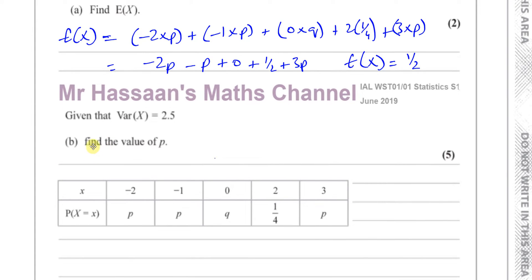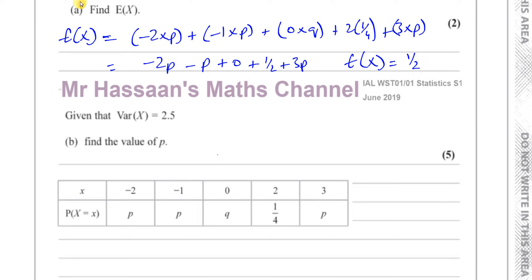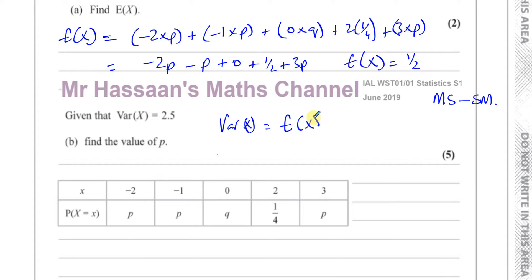I've just brought this table down here so I can see what's happening. The variance of X is given by — if you remember — it's the mean of the squares minus the square of the mean. So we need to find E(X²), the expected value of X squared, and then subtract the expected value of X, all squared, which is the mean we found.